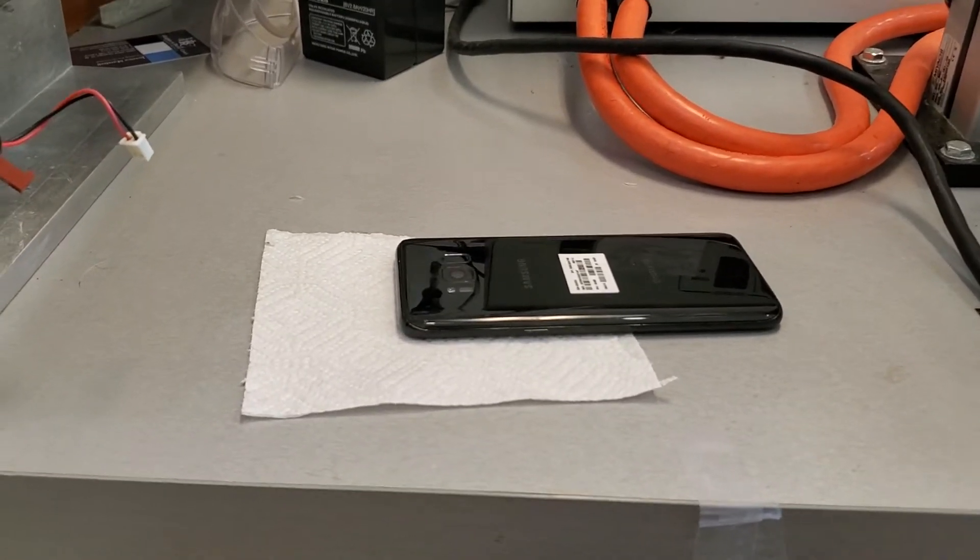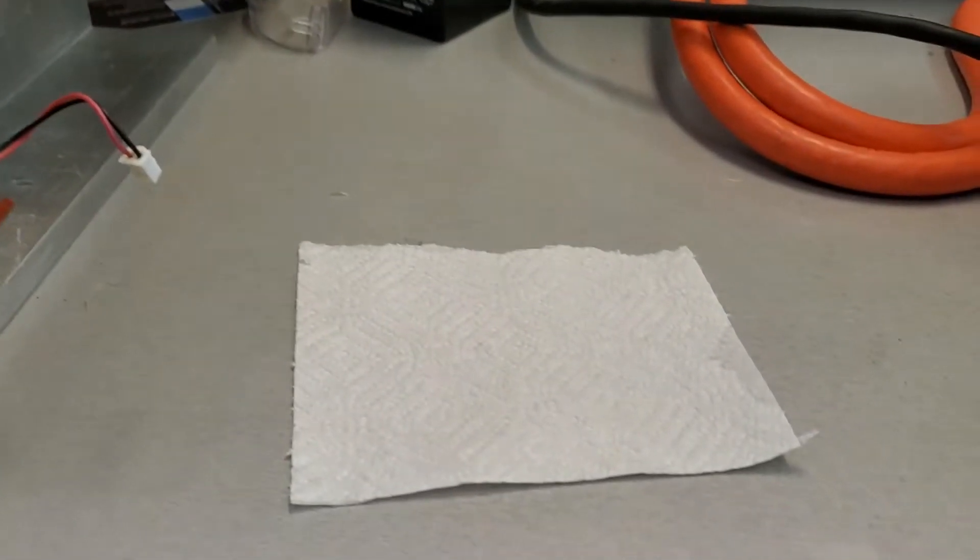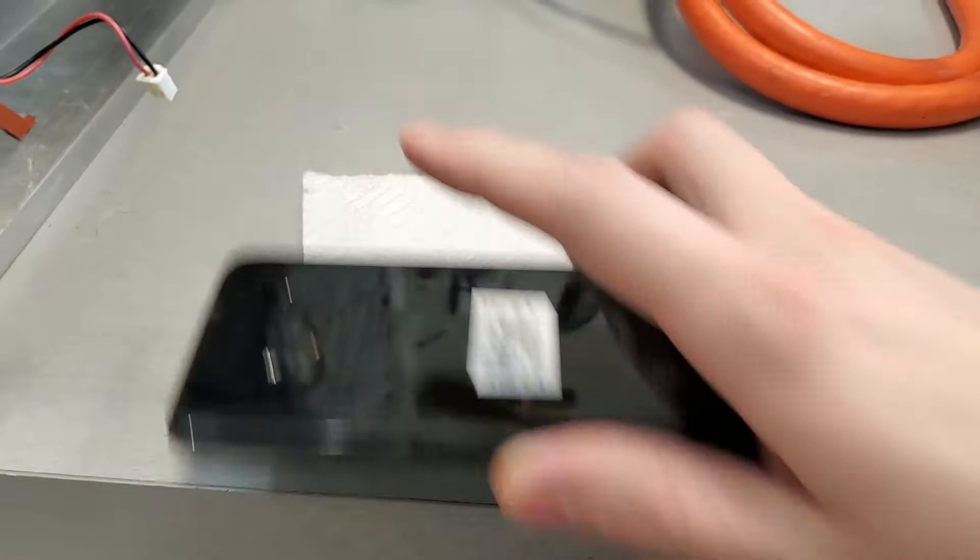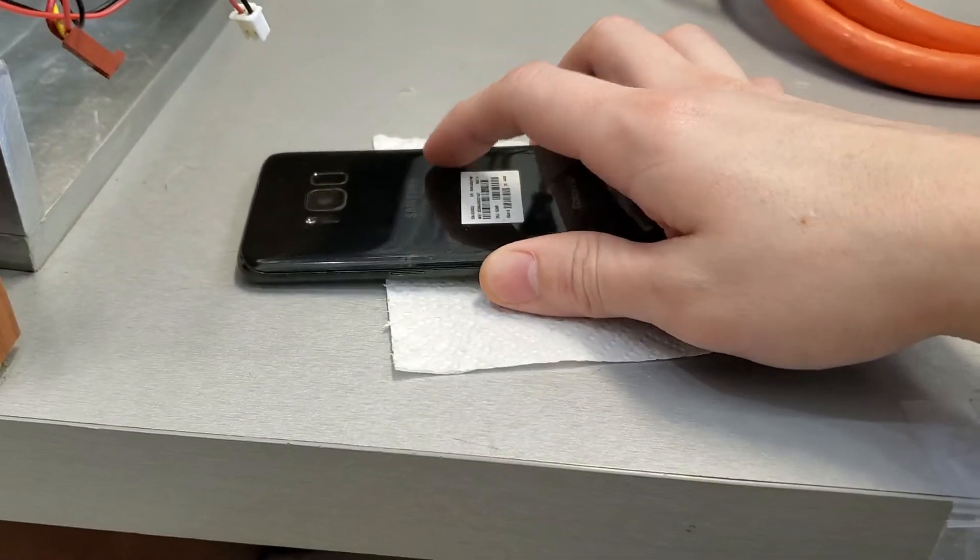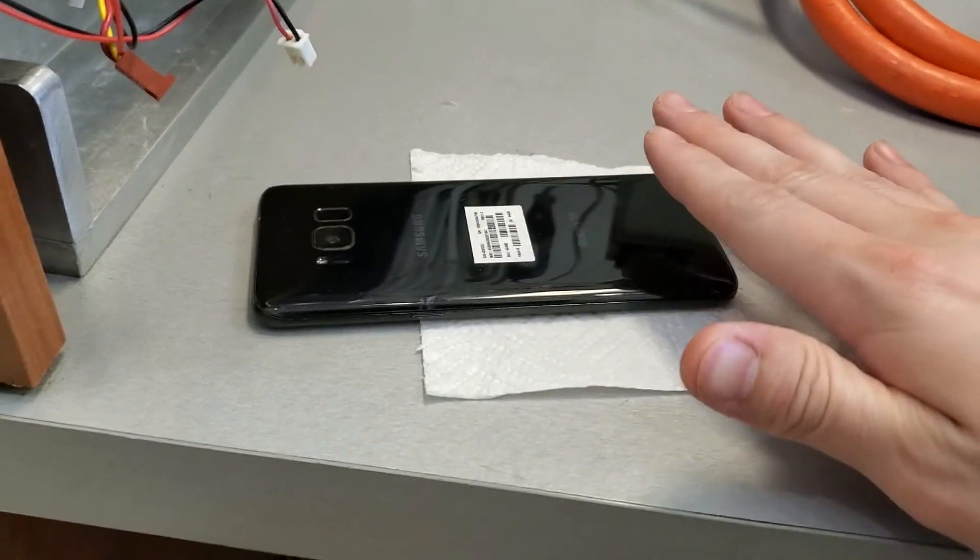Okay, I just discovered something really bizarre. Galaxy S8, random piece of paper towel. I was just trying to cushion this phone while I put weight on it to seal the adhesive on the back. The phone's warm right now.